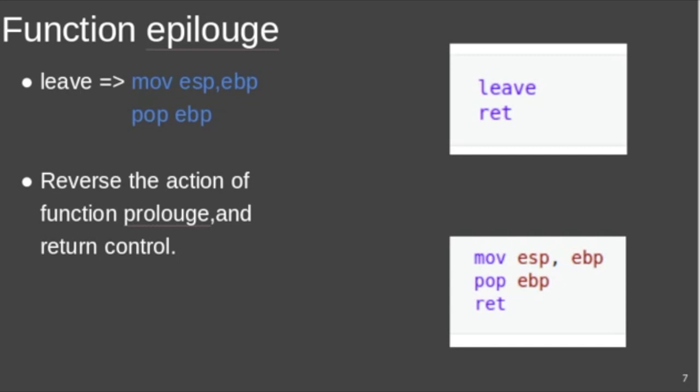It helps in dropping the stack pointer to the current base pointer, so room reserved in the prolog for local variables is freed, and it pops EBP—that is, it pops the base pointer off the stack so it is restored to its value before the prolog.